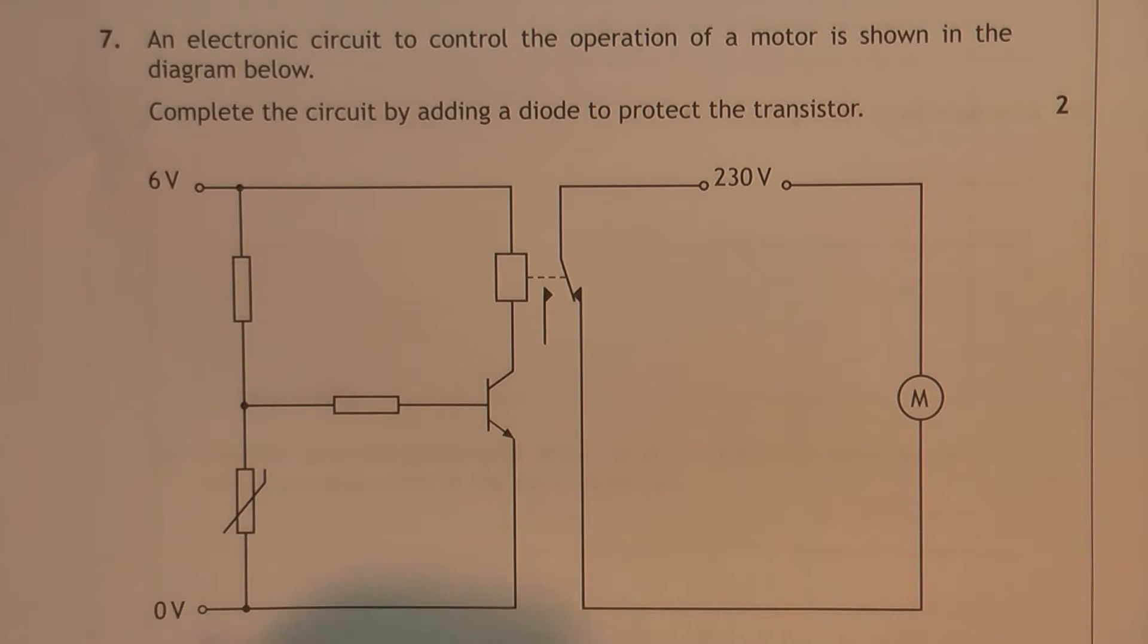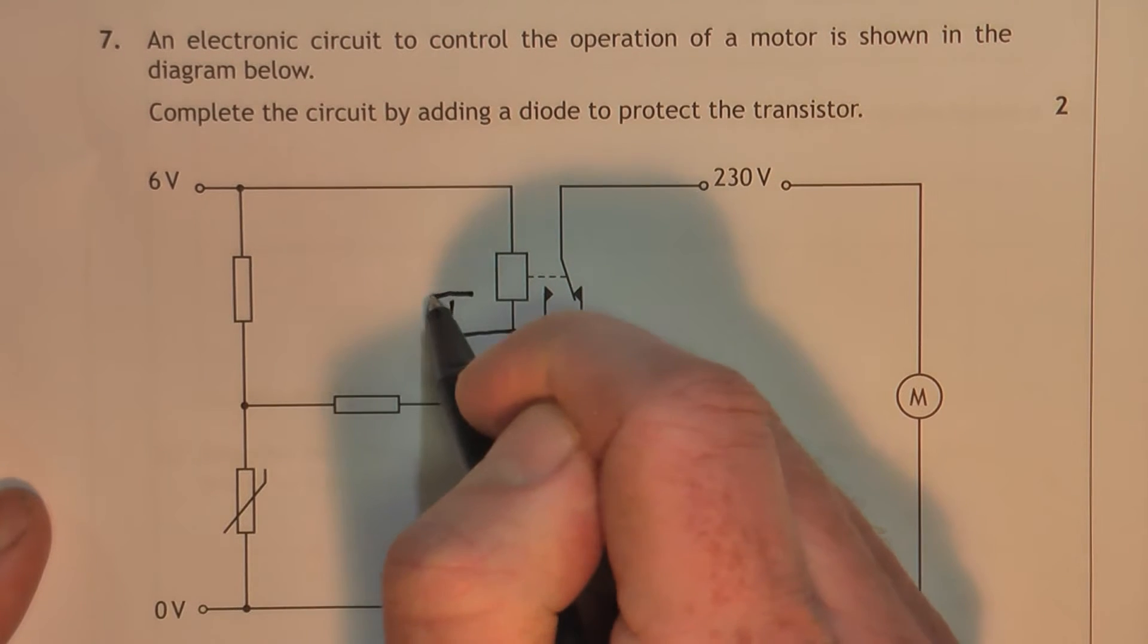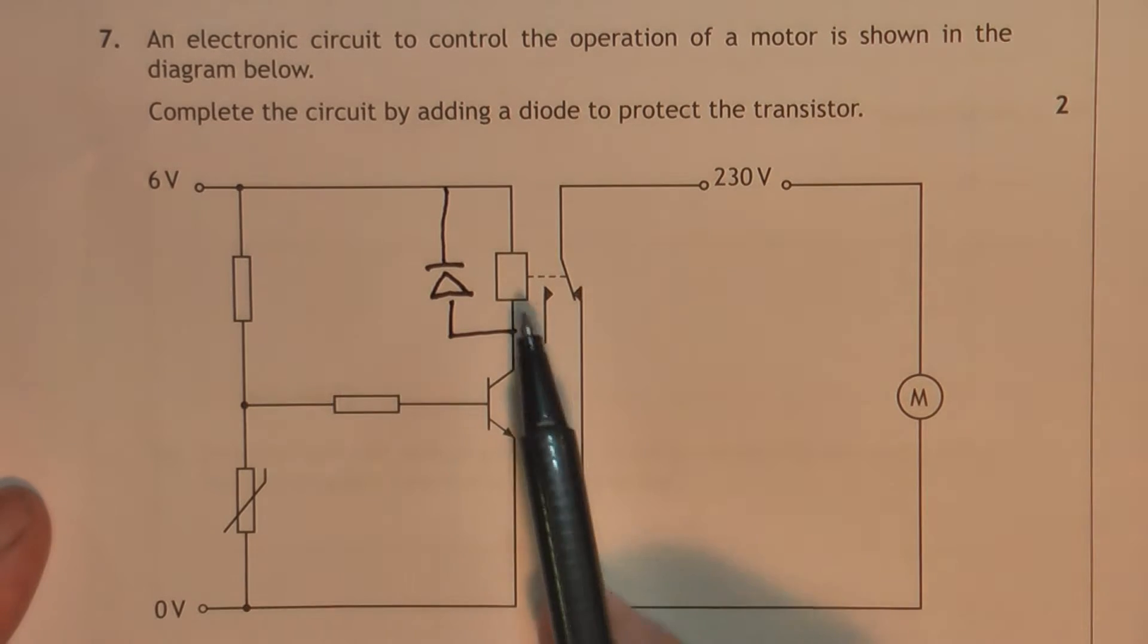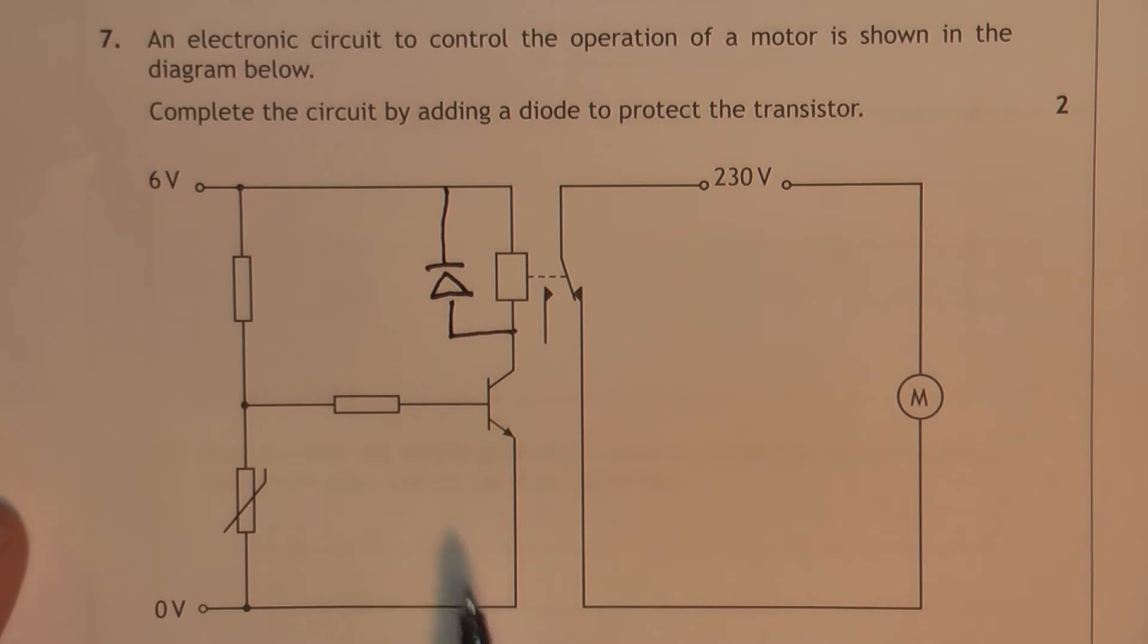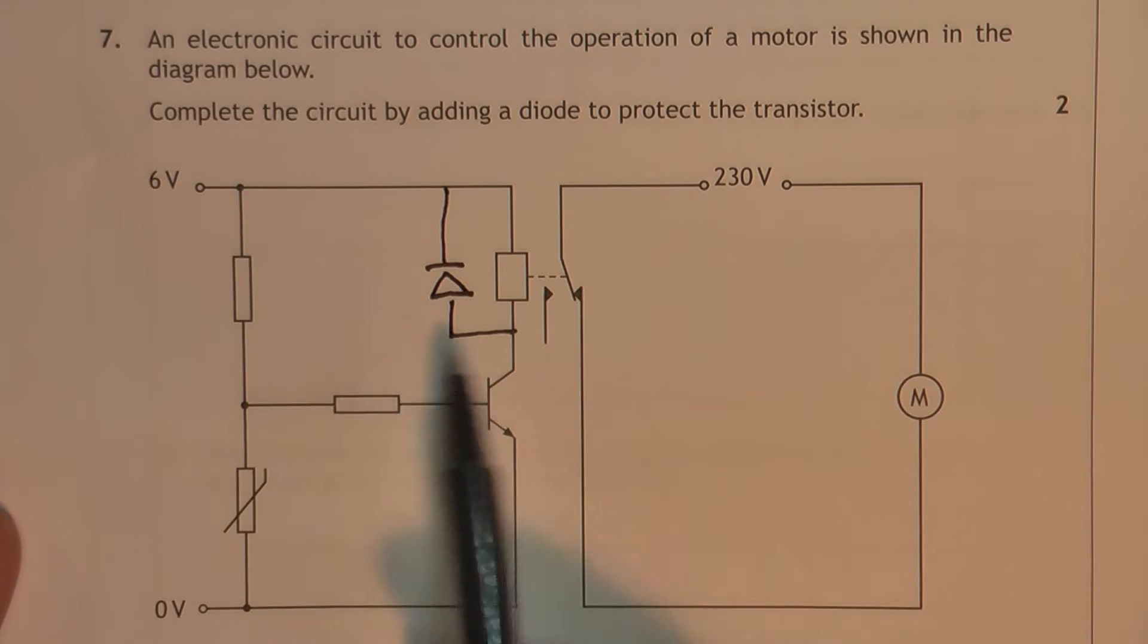This question is asking for a diode to protect the transistor. The diode protects the transistor from back EMF. The back EMF is generated by the relay. This resistor here is protecting the base of the transistor from excessive current flowing down here. So the diode protects the transistor from back EMF.